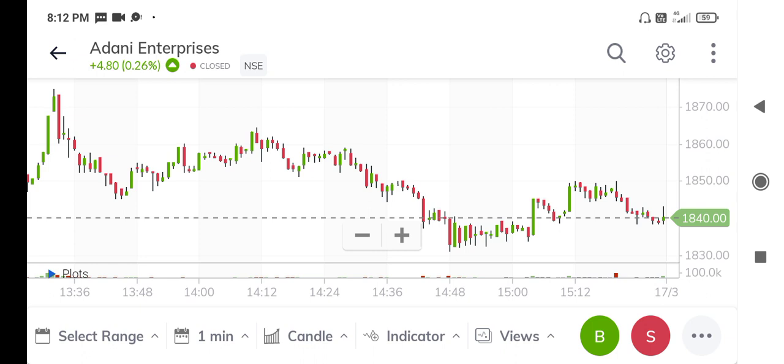By watching these candlesticks, we can easily identify the stock movements. This is called visual understanding - by watching the graph only, we need to understand that particular data. Simply, this is called retinal variables - variables means values, means properties. Thank you, this is the example for retinal variables. Subscribe my channel.